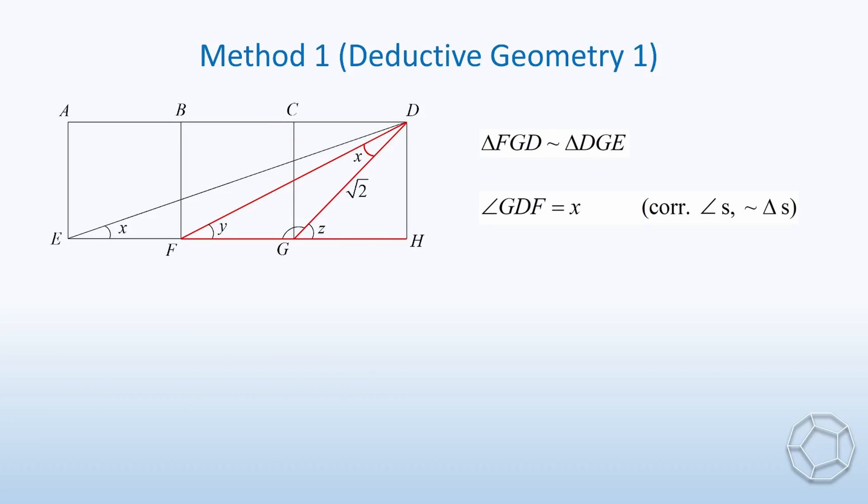Let's focus on the red triangle FGD again. By exterior angle of triangle, we have x plus y is equal to z, which is equal to 45 degrees. In other words, x plus y plus z is equal to 90 degrees. Great! How about other geometric methods?